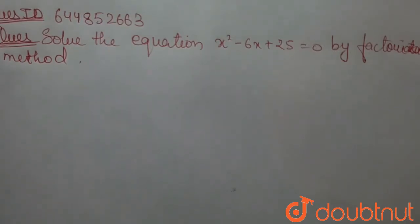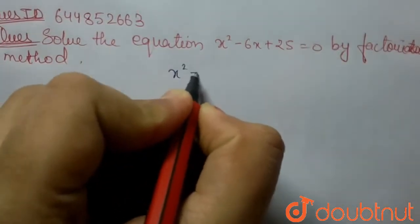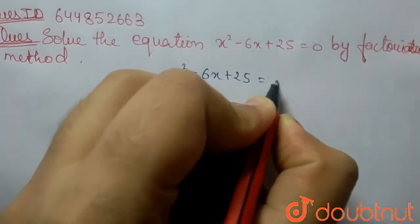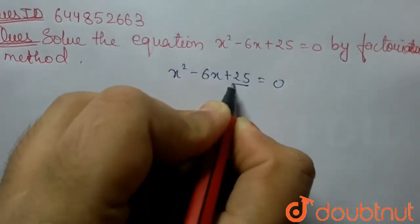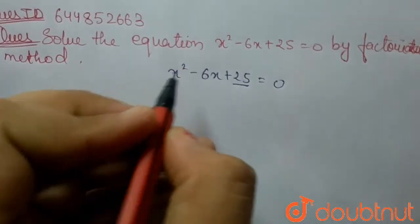So we can write this equation x² - 6x + 25 = 0, and we can break the 25 into 9 plus 16.